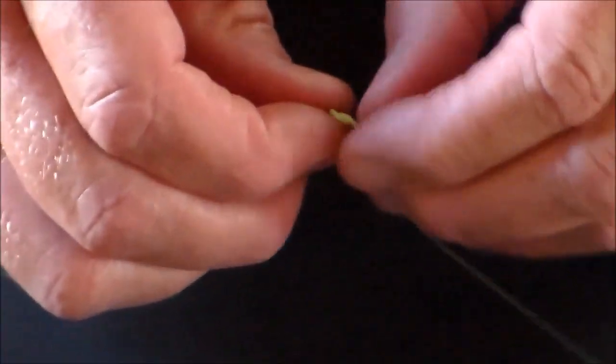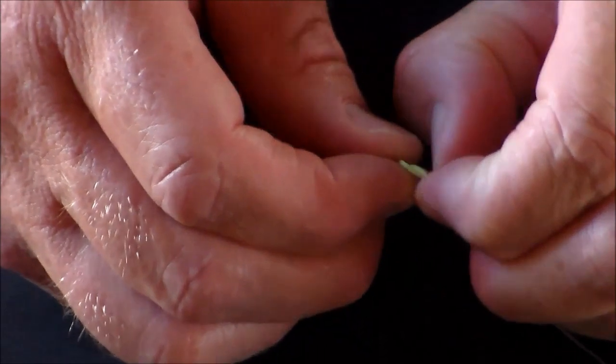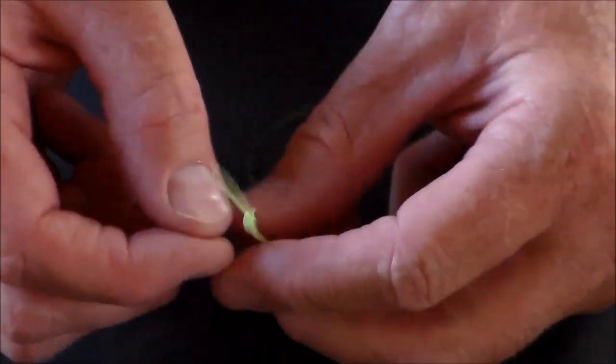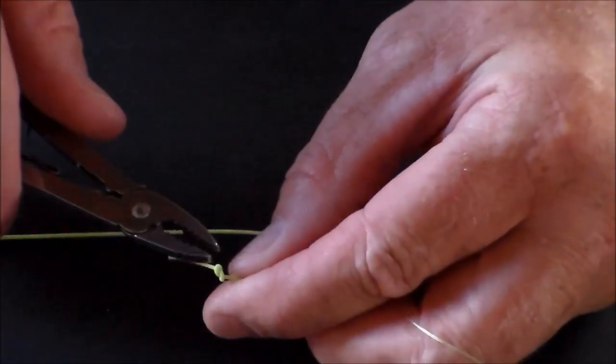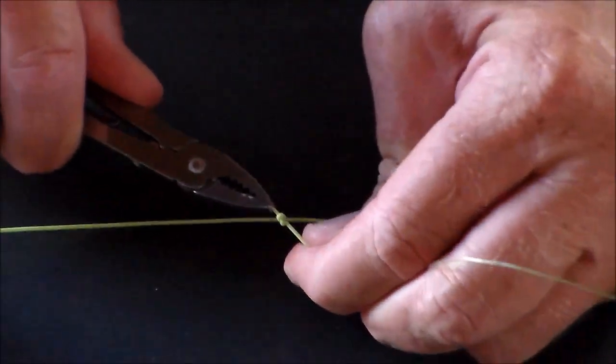In the fly line, you tie an overhand knot, just a simple overhand knot in the fly line. It helps if you pull it tight with your teeth or pliers.